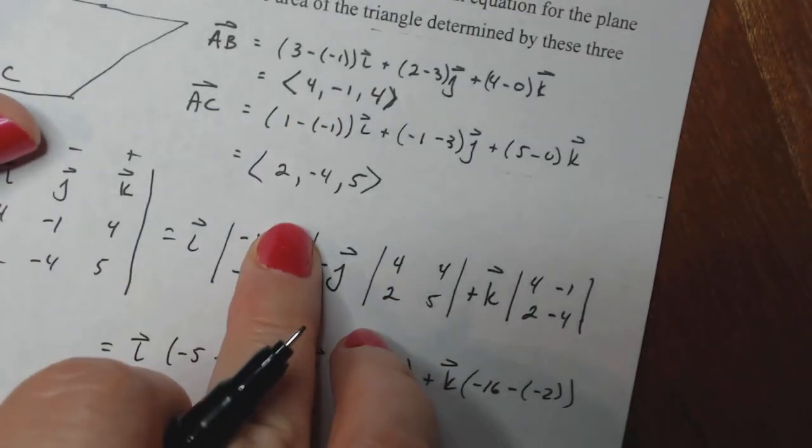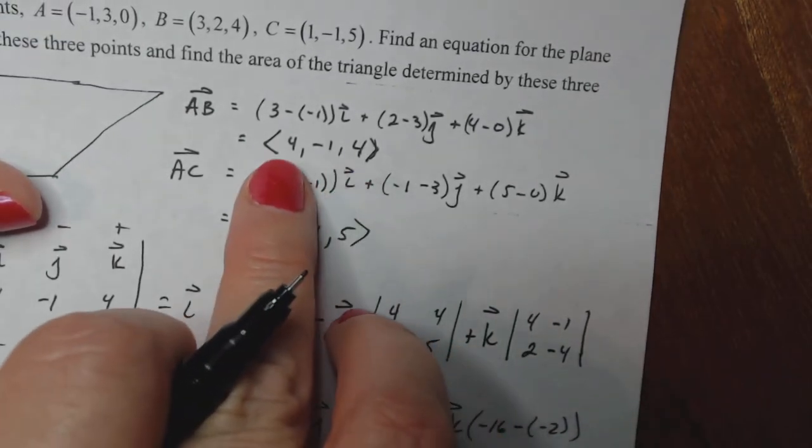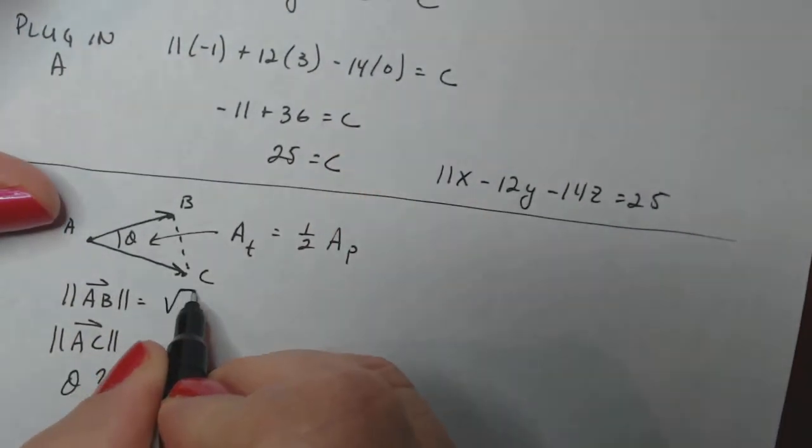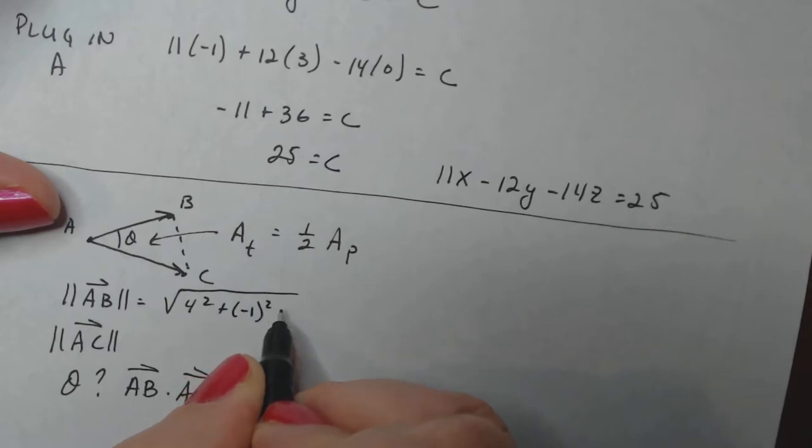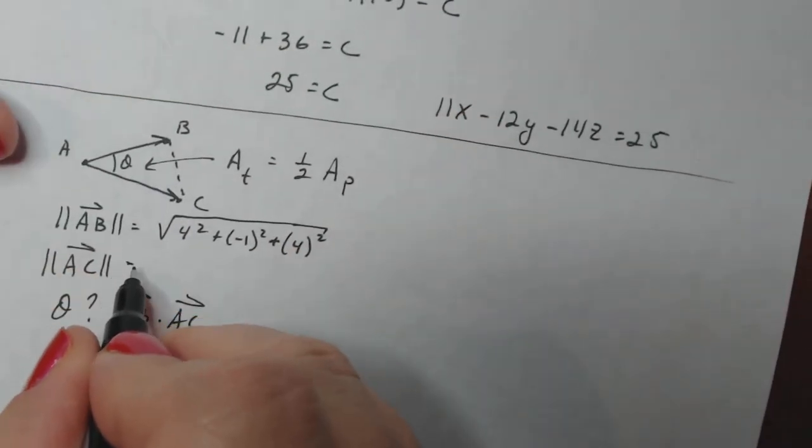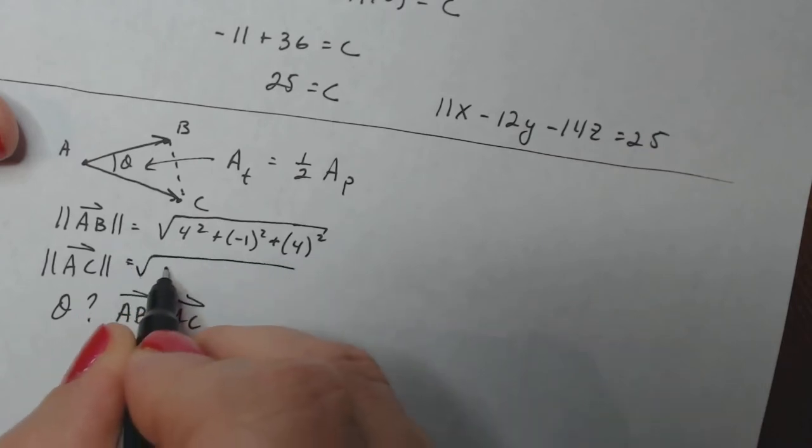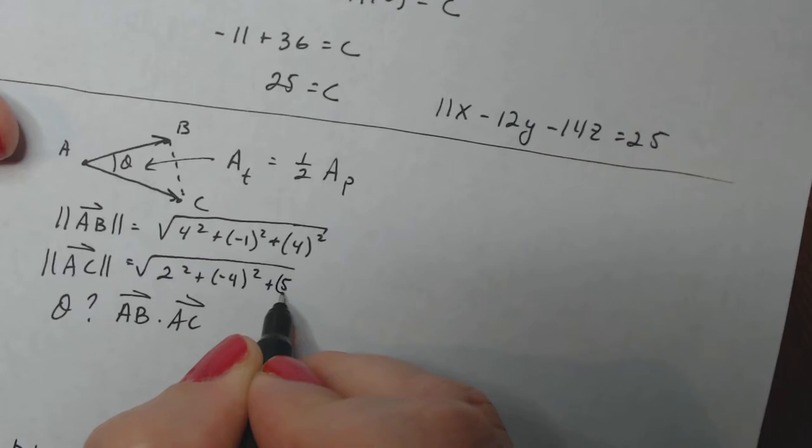So let's find these magnitudes. Here's our vectors, AB, AC. So I just got to square each of these. So 4 squared minus 1 squared, 4 squared. And then for AC, 2 squared minus 4 squared, 5 squared.